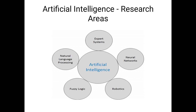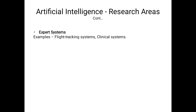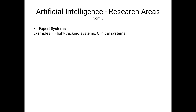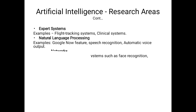Further examples of industrial robots include precision checking, drilling, cleaning, coating, carving, and so on. Examples of fuzzy logic systems include consumer electronics and automobiles. These five — expert systems, neural networks, robotics, fuzzy logic, and natural language processing — are the main research areas of artificial intelligence, along with their respective examples.